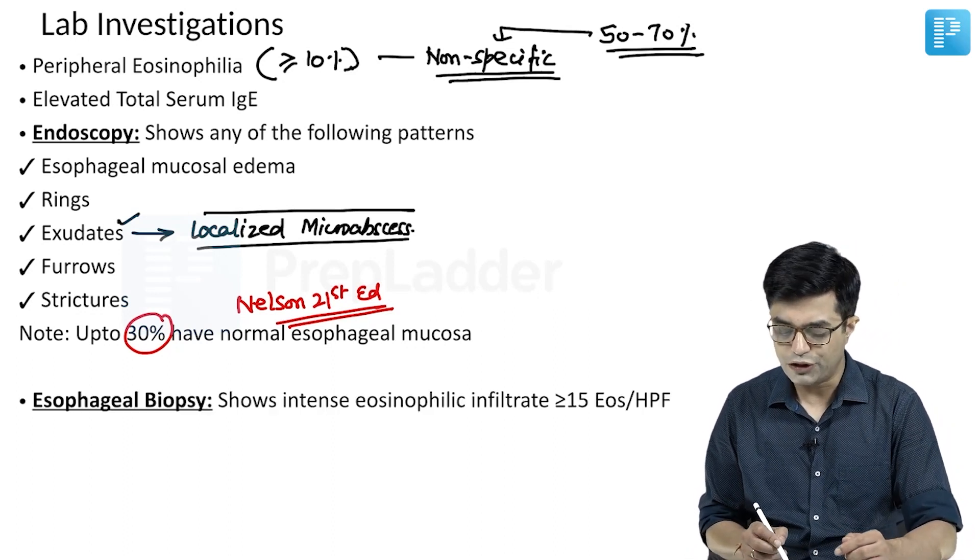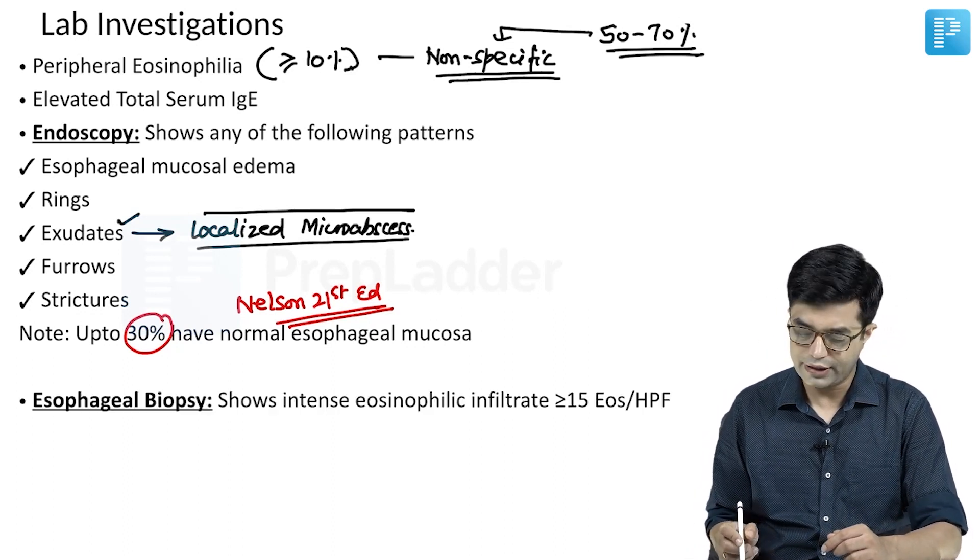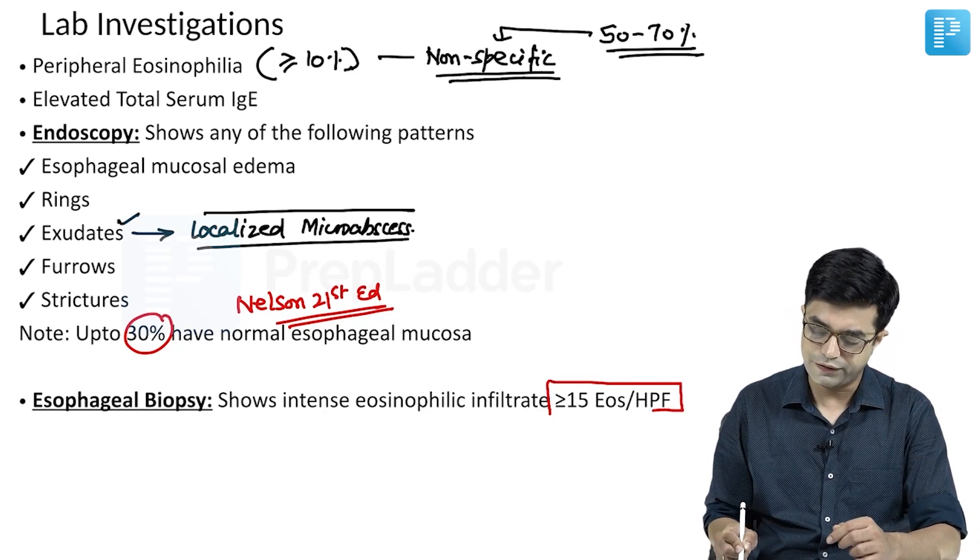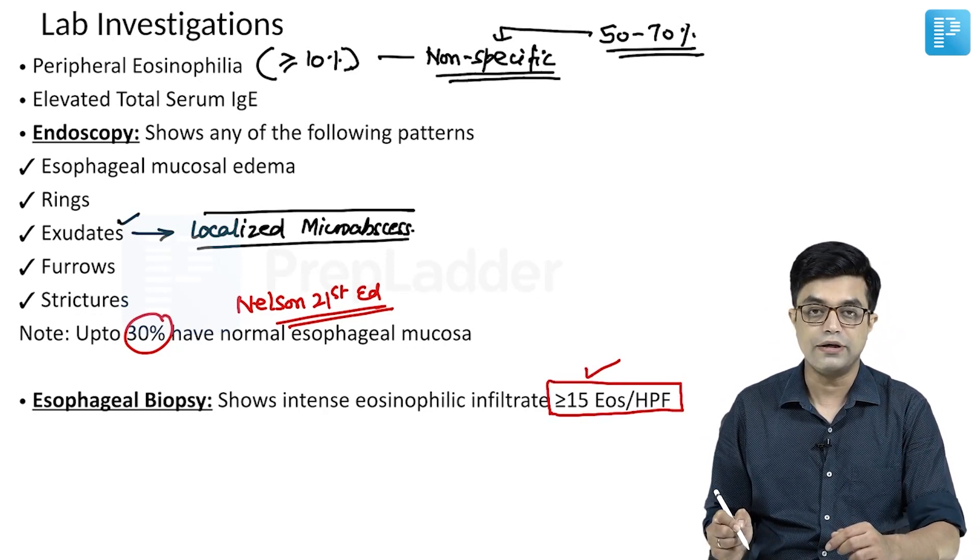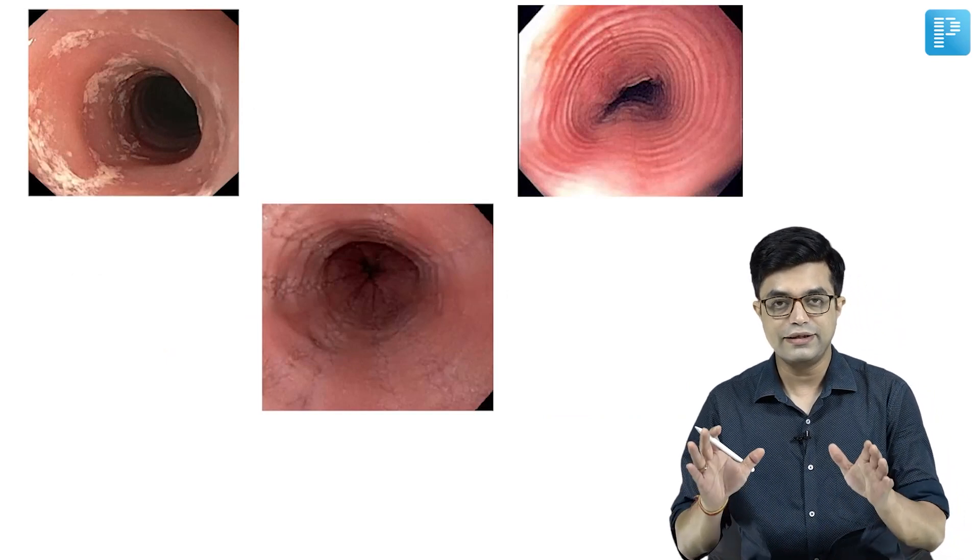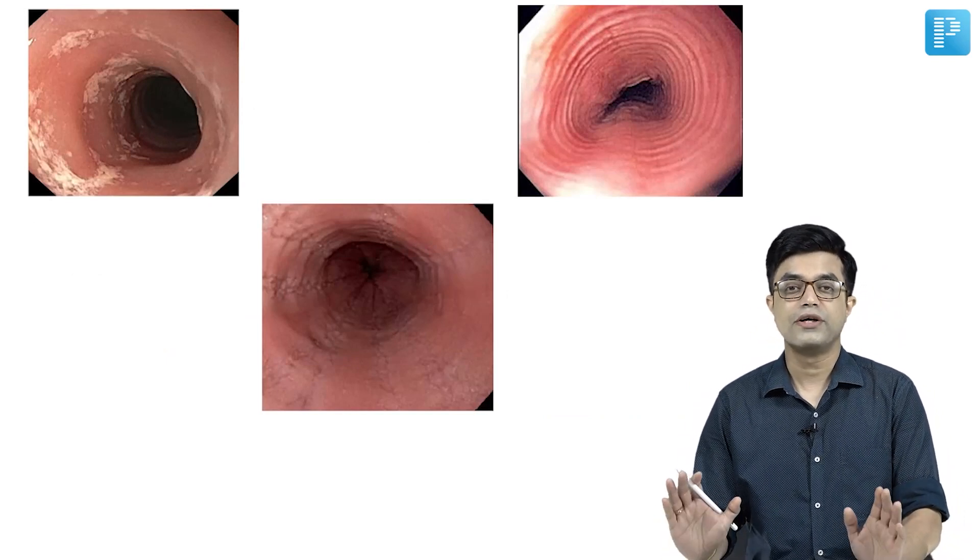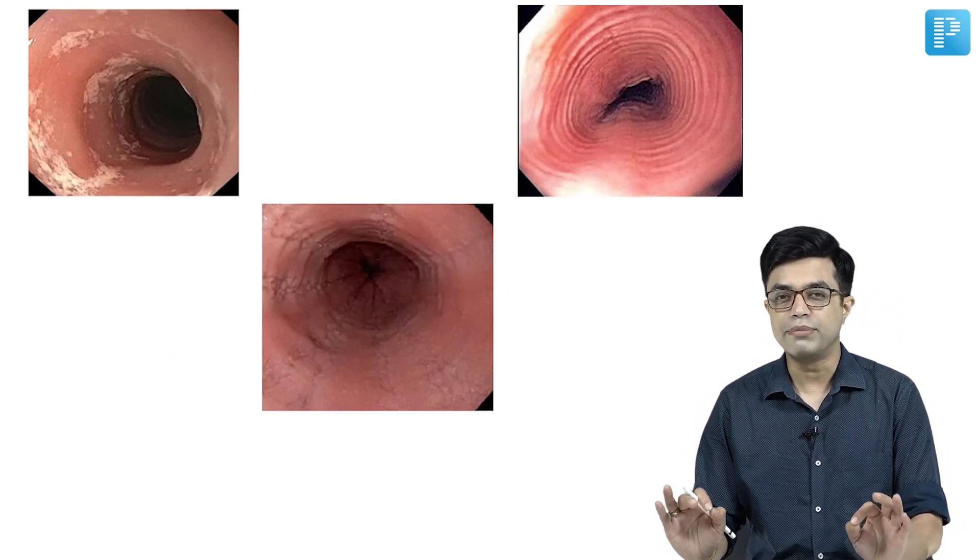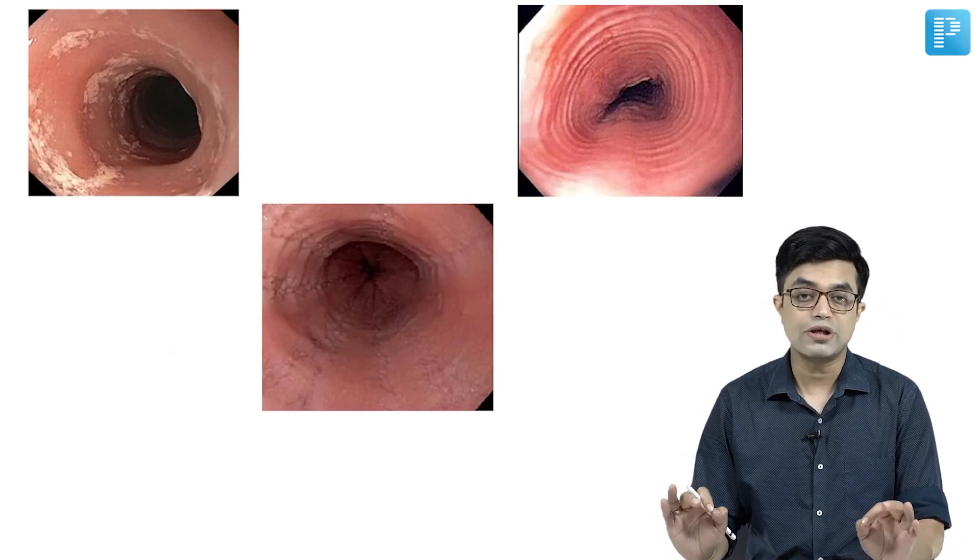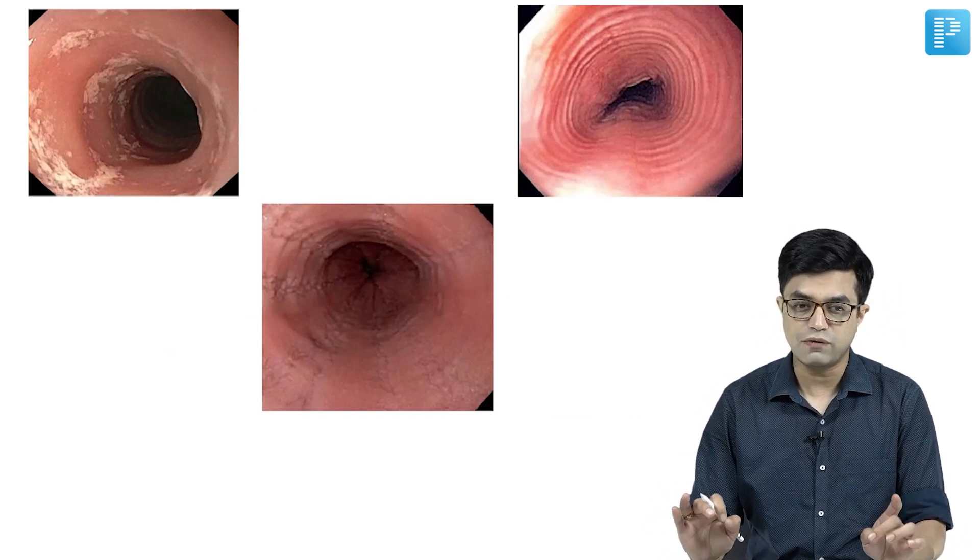Esophageal biopsy will show intense eosinophilic infiltrate with ≥15 eosinophils per high power field. These are the three pictures you need to remember, as visual MCQs can be asked upon this.